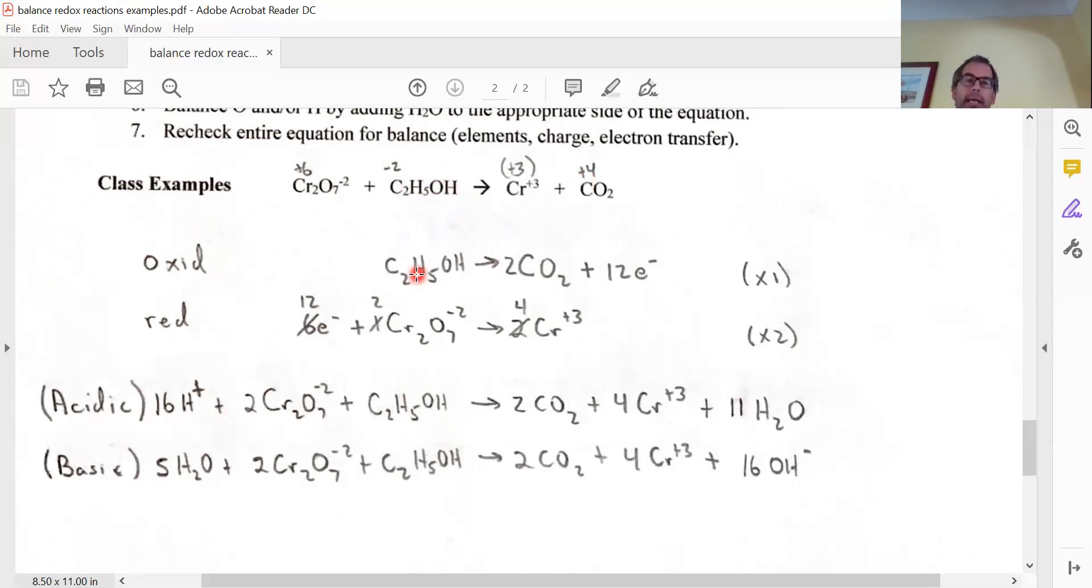So if I look at what's oxidized, I'm going to say this whole thing looks like ethanol would be going from C2H5OH to CO2, and how many electrons are lost.